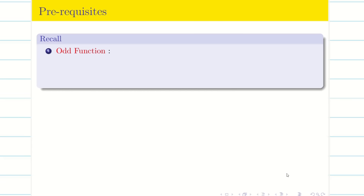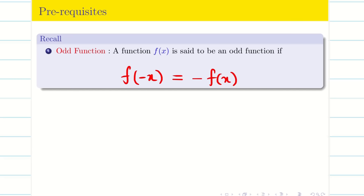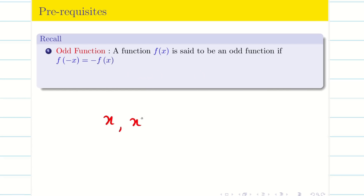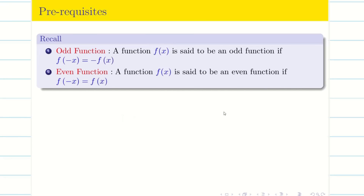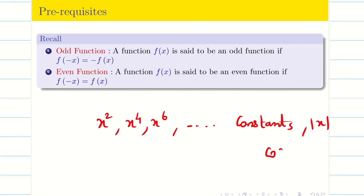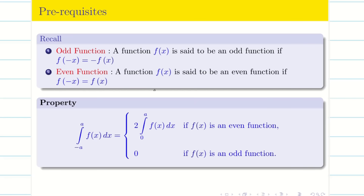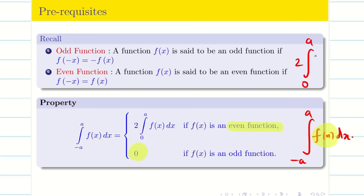Recall odd and even functions. A function f(x) is odd if replacing x by −x gives −f(x). Examples: x, x³, x⁵, and sin(x). A function is even if replacing x by −x still gives f(x). Examples: x², x⁴, x⁶, constants, |x|, and cos(x). Key property: the integral from −a to a of f(x) dx equals 0 if f is odd, and 2 times the integral from 0 to a of f(x) dx if f is even. This property will be used throughout the unit.